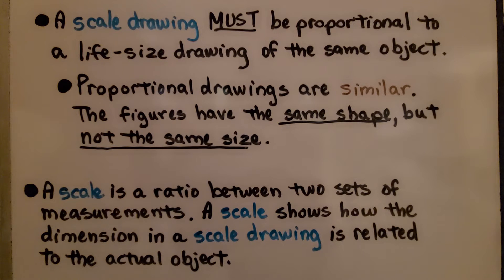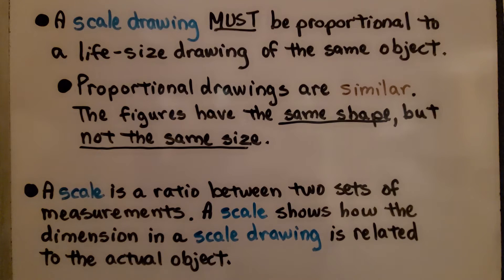A scale drawing must be proportional to a life-size drawing of the same object. Proportional drawings are similar — the figures have the same shape but not the same size. A scale is a ratio between two sets of measurements, and it shows how the dimension in a scale drawing is related to the actual object.